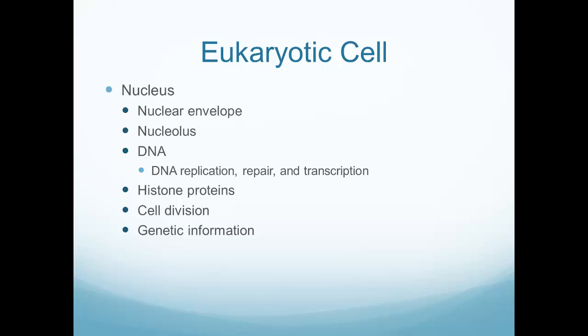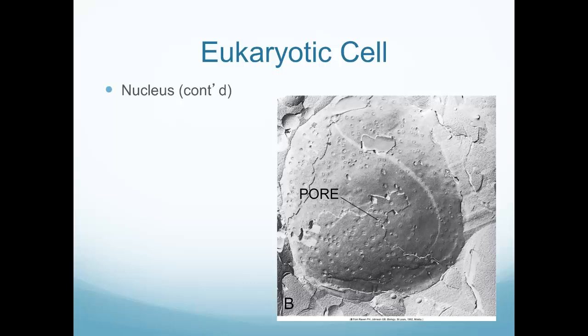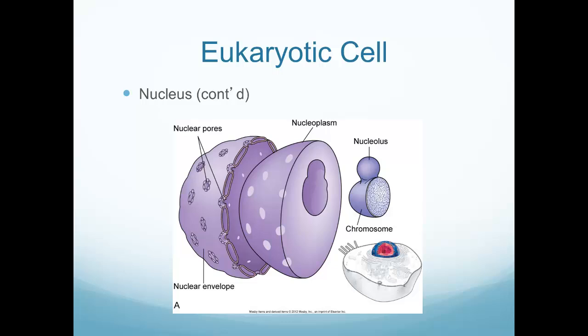As for our eukaryotic cell, we have the nucleus being the center part — the brain of the cell — where we have our DNA, information about cellular division, genetic information, and all that is included in the nucleus. This picture shows the nucleus and specifically points out a pore in it. On the outside of that nucleus there is the nuclear envelope containing the nuclear pores, and inside we have our nucleolus with the chromosomes — our main information for dividing and creating more cells.